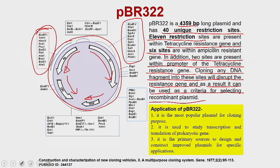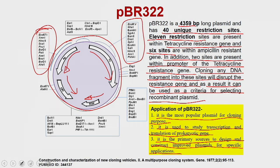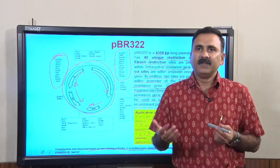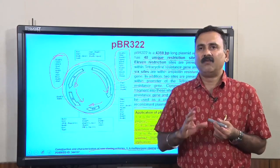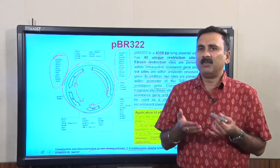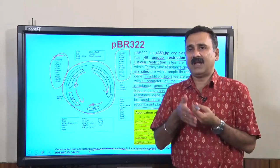PBR-322 was the first or initial plasmid developed for molecular cloning purposes and was very popular for cloning. It is used to study transcription and translation of prokaryotic genes, and it is the primary source for designing and constructing improved plasmids for specific applications. Students are encouraged to read the original article to learn how to design new vectors so that, if required, they can redesign plasmids for their own purposes and overcome problems with existing plasmids in their labs.